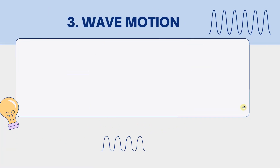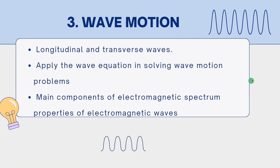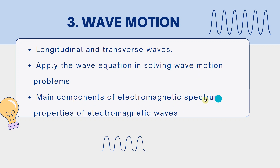Moving to Grade 11 topics, Wave Motion is one that does not miss in an exam. You need to look at longitudinal and transverse waves — what a longitudinal wave is, how to draw it, its parts, how it is generated, and how it differs from a transverse wave. Also apply the wave equation to solve problems involving velocity, frequency, and wavelength. Look at the main components of the electromagnetic spectrum and the properties of electromagnetic waves.